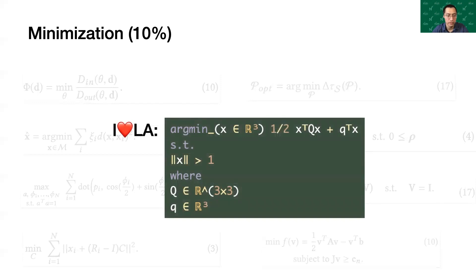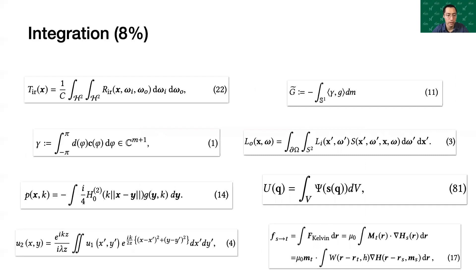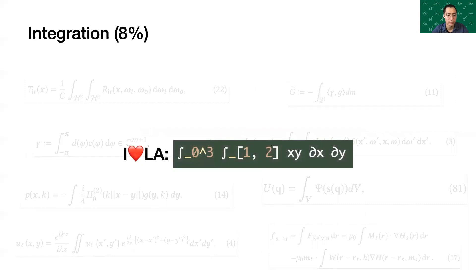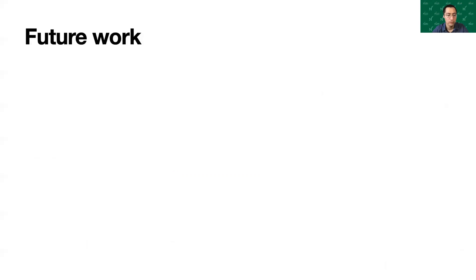I❤LA already has syntax for simple constraint function minimization. Code generation uses available routines in the target platform. We want to support more advanced versions of this in the future. Integration also appears in many equations. I❤LA already has syntax for simple integration. Code generation is dependent on numerical integration routines in the target platform.